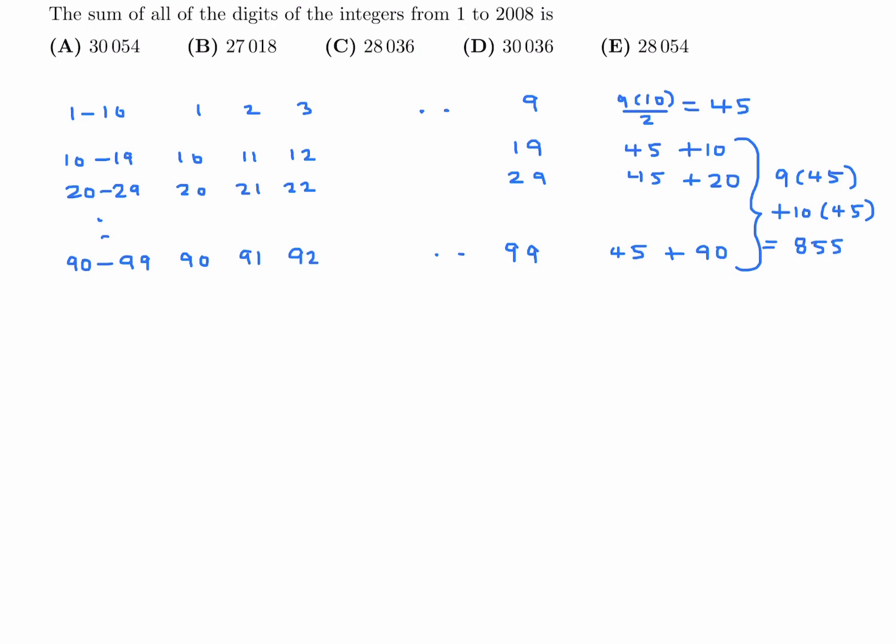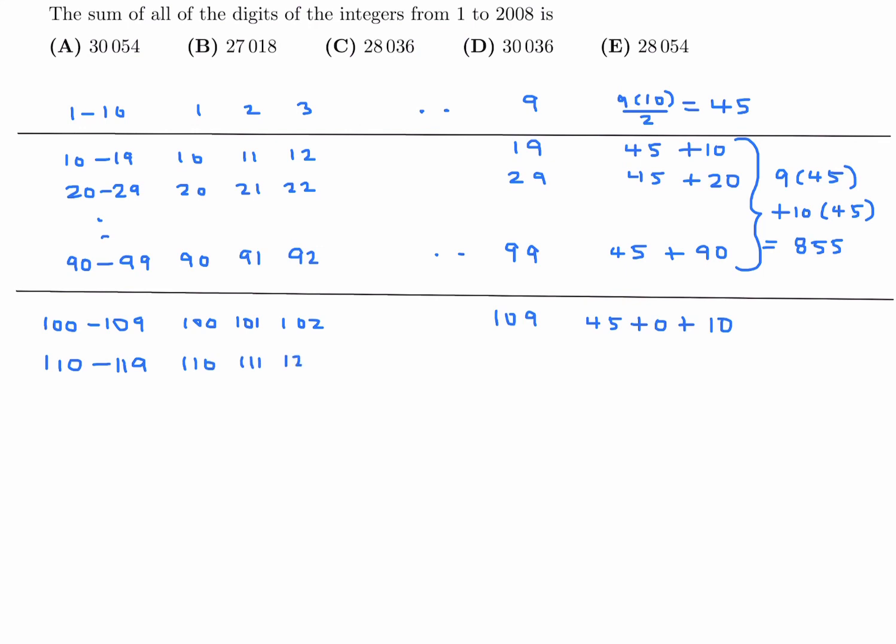Now we get to the next part, which is going to be hundreds. So let's look at 100 to 109. So we got 100, we have 101, 102, all the way until 109. And then if you're adding up the digits, the units digits will give you 45. The tens digits give you nothing. And then the hundreds digits is all ones. And there's 10 of those, so we got 10. And then we got 110 to 119. 110, 111, 112, all the way until 119. Units digits, again, give me 45. But now the tens digits give me all ones. So if I add up those, it'll be 10 of those. And then the hundreds digits are, again, just ones. So that just gives me 10.